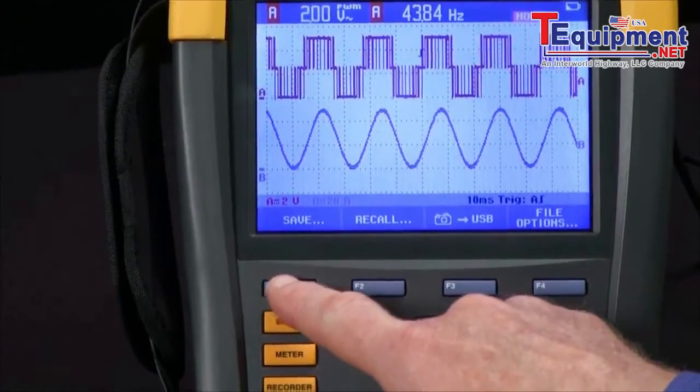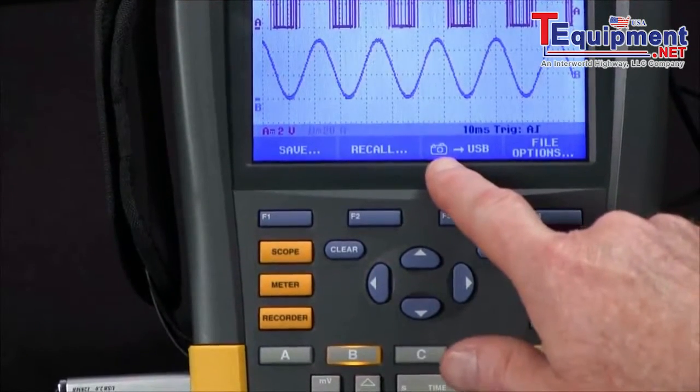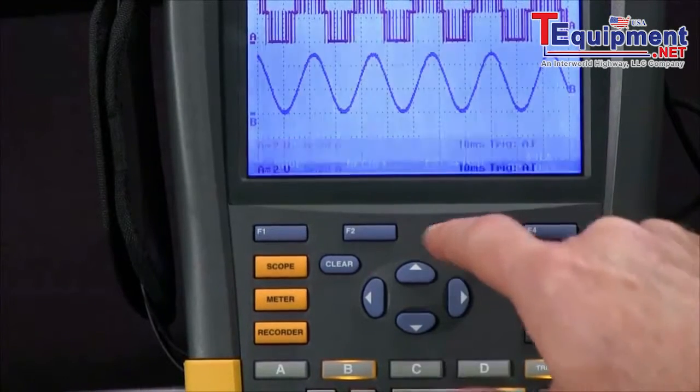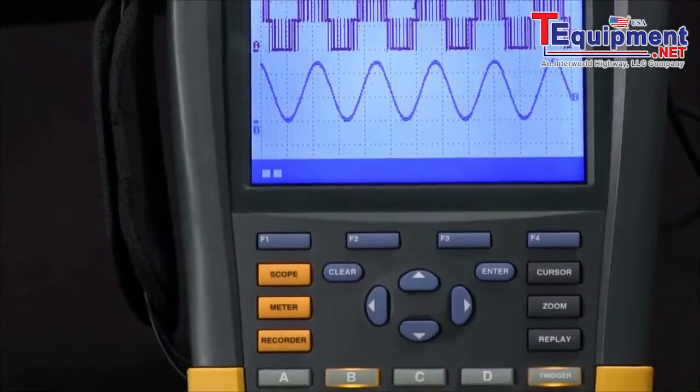Another way to save the information is to save a snapshot of the screen directly to the USB. If I hit the F3 key, we'll save a snapshot.